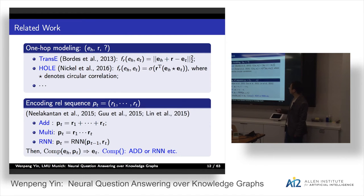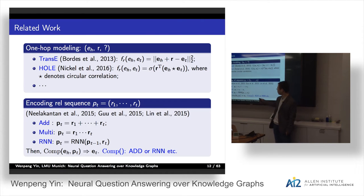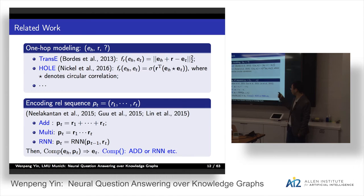Including the relation sequence — given R1 to RT — some related work models the relation sequence either by adding the embeddings of the relations, or by multiplying the relation embeddings, or by using a recurrent neural network to encode the relation sequence. Then they compose the head entity EH with the path PT to predict the tail entity ET. The composition function is flexible; it can be a recurrent neural network. In our work we compare them.